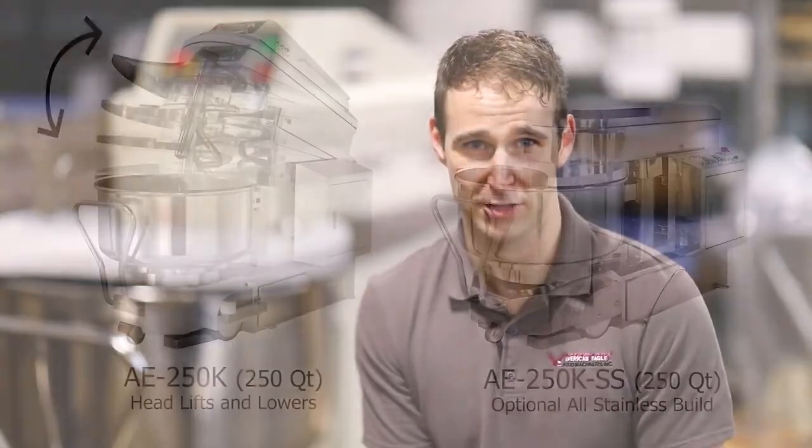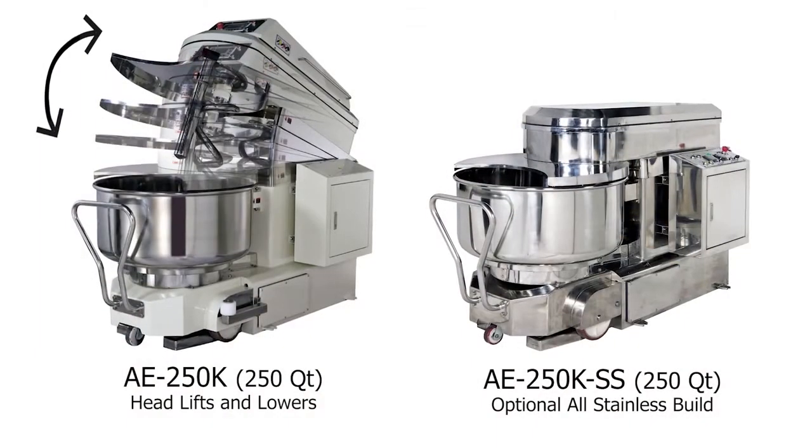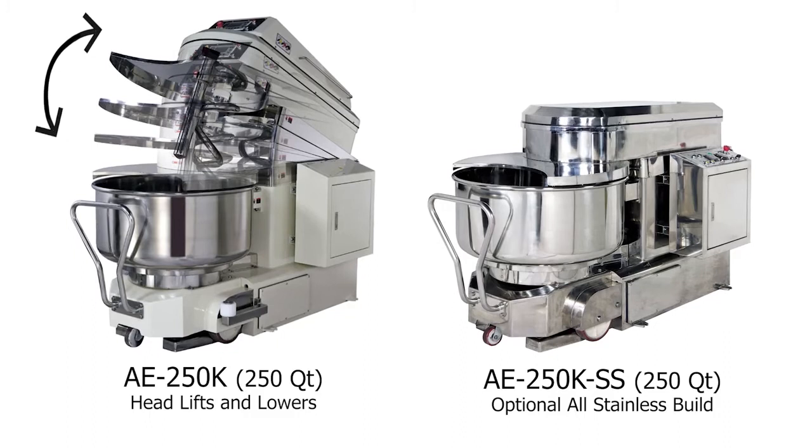Today we're taking a look at the AE200K, which is the 190-quart removable bowl spiral mixer. It's the smaller of two removable bowl spiral mixers that American Eagle manufactures. The other is the AE250K, which is a 250-quart model.